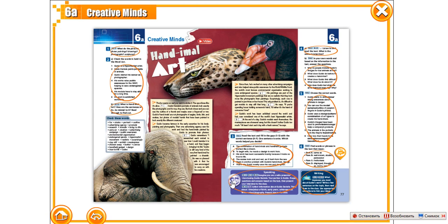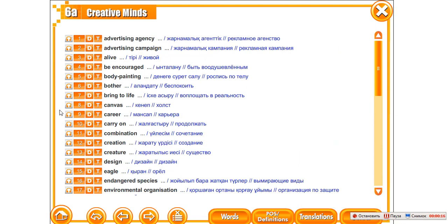Good morning to everybody. This is my lesson today — Creative Minds. I'd like you to open your student books at the 76th page and prepare your vocabularies to write down new words. Prepare these words in your vocabularies and learn them by heart. First of all, let's repeat them all together.